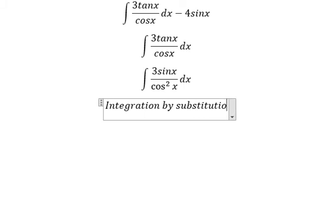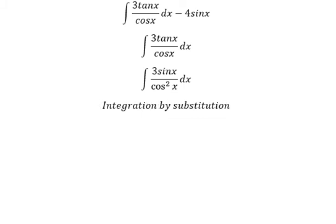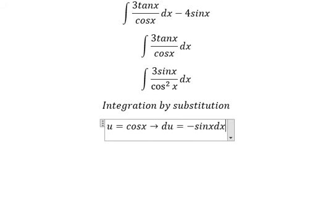So I will put u equals cosx. Then du we have negative sinx dx, because the first derivative of cosx we get negative sinx. Because we don't have the negative sign in here, so we put the negative next to du.